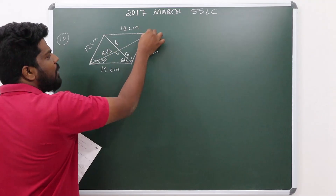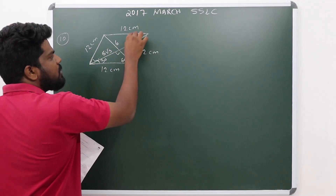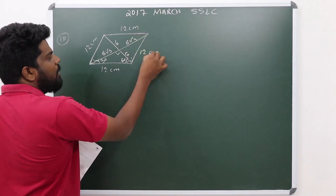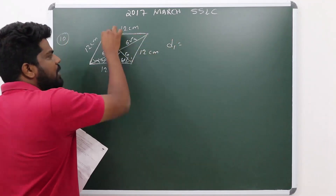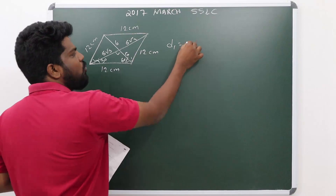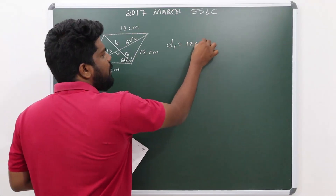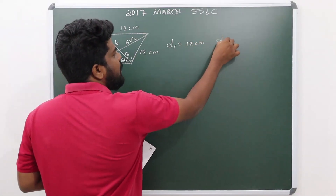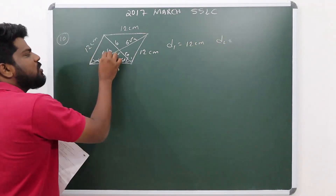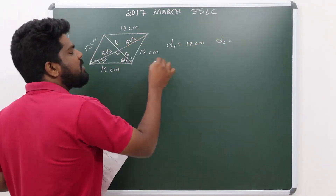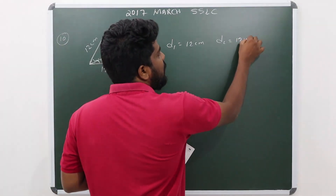So the half-diagonal values are 6 and 6√3. Therefore, the first diagonal length is 6 plus 6 equals 12 cm. The second diagonal length is 6√3 plus 6√3 equals 12√3 cm.